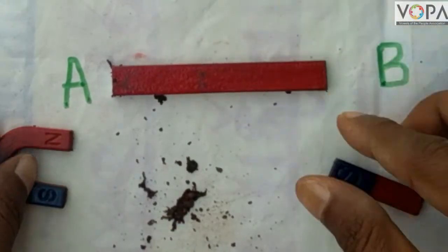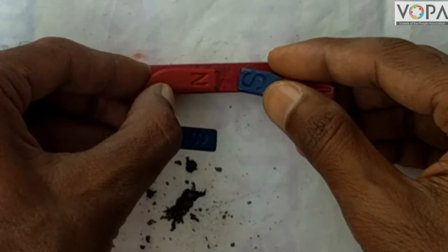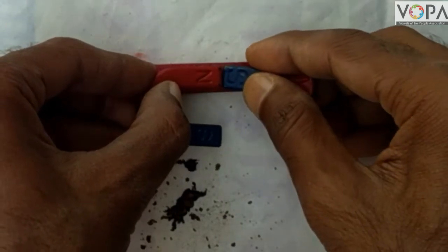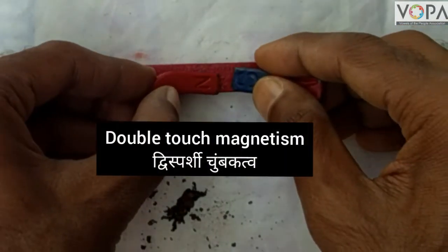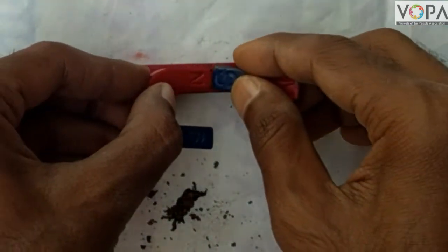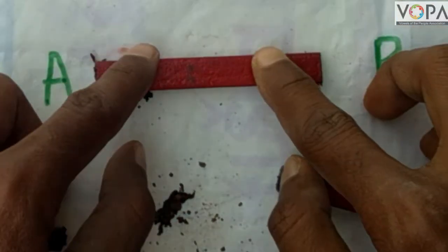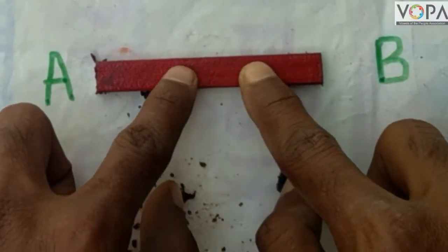In this way, a magnet is caused by dragging two different poles of two magnets on a steel bar. Such type of magnetism is called double touch magnetism. This is a steel bar which is magnetized by double touch.